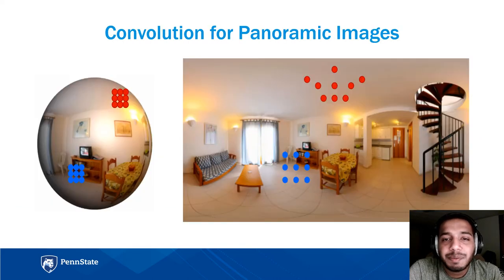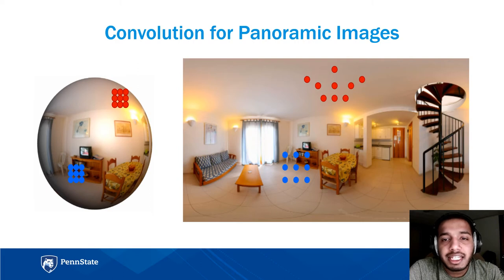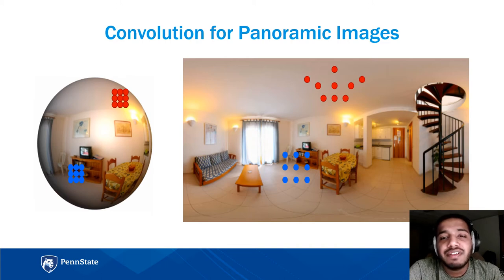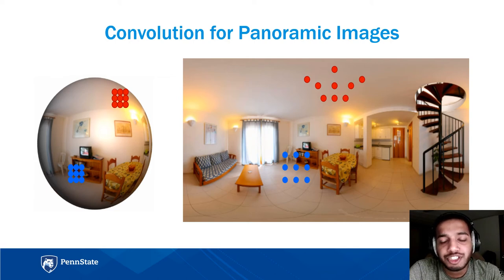Although existing works show impressive performance for both cuboid as well as non-cuboid layouts, none of them consider the distortions that equirectangular images contain. There is an incongruence between panoramic images and standard convolution networks. Equirectangular images, which are a common example of spherical image representation, have heavy distortions — especially towards the poles, as you can see in this image — and these cannot be addressed by standard convolutions. This is a bottleneck in all prior approaches to room layout estimation.